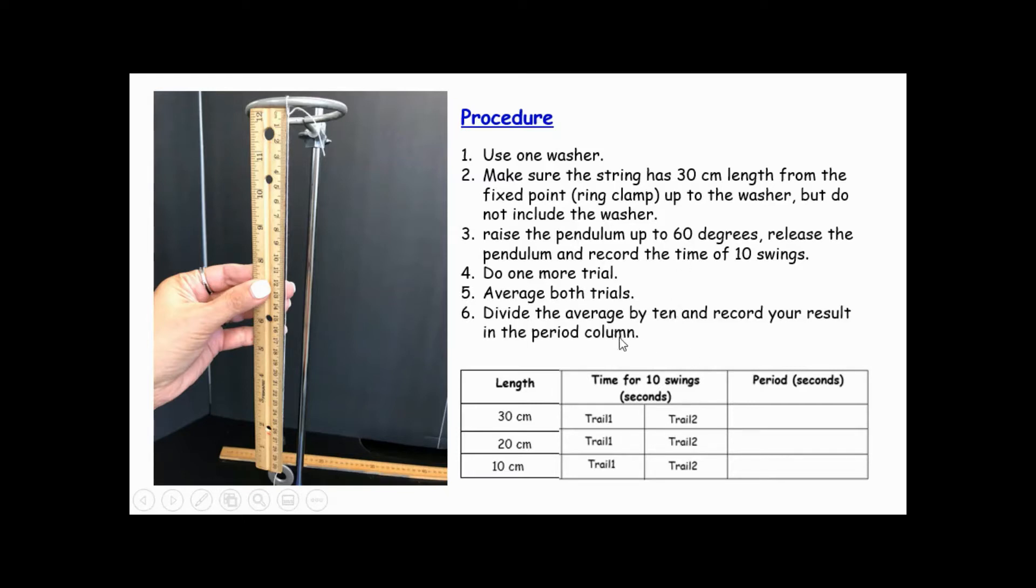You average both trials, and then you divide the average by 10 and record your result in the period column. In this case, you are going to keep constant the angle of release, which is 60 degrees, and you are going to keep constant the hanging mass, which will be just one washer.